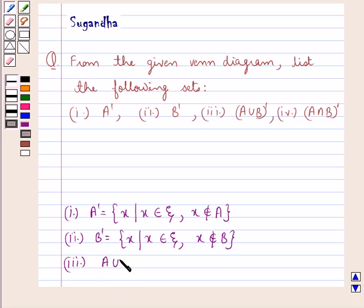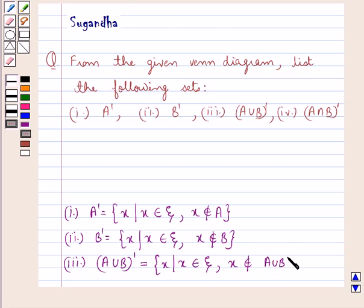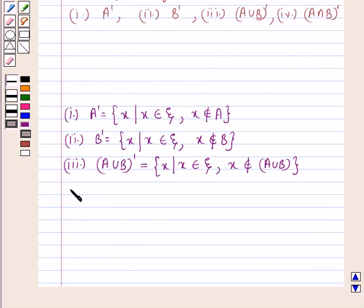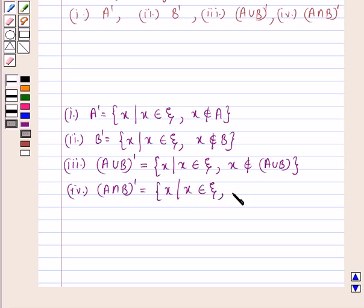Now, A union B complement would be the set containing the element X such that X belongs to the universal set ξ but X does not belong to A union B. In the same way, A intersection B complement would be the set containing the element X such that X belongs to the universal set ξ but X does not belong to A intersection B. So, this is our key idea.